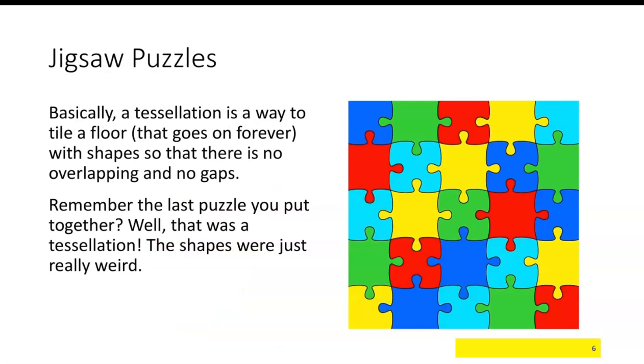Basically, a tessellation is a way to tile a floor. Imagine a floor that goes on forever with shapes so there is no overlapping and no gaps. If you remember the last time you put together a jigsaw puzzle, that was a tessellation—the shapes were just really weird.